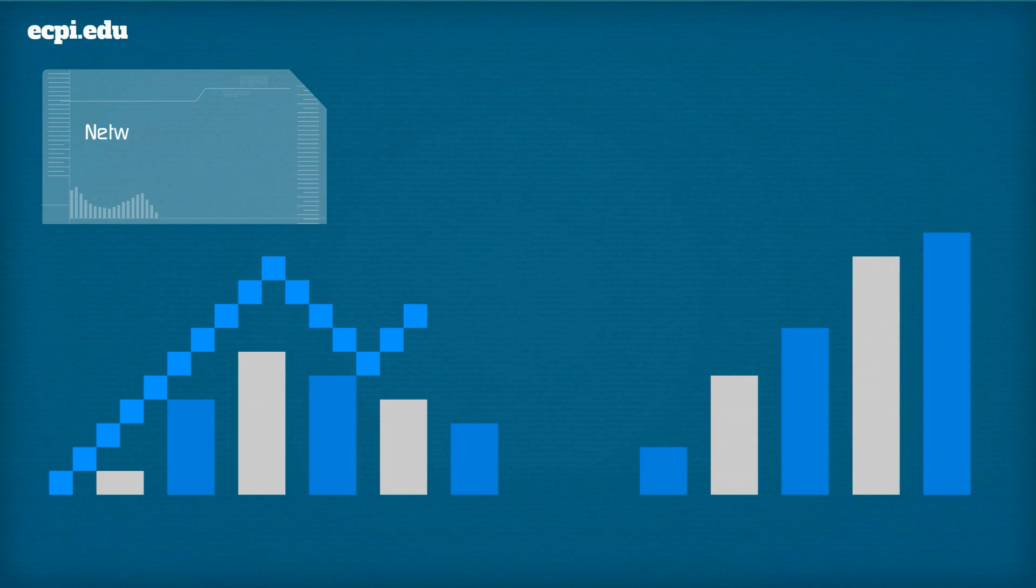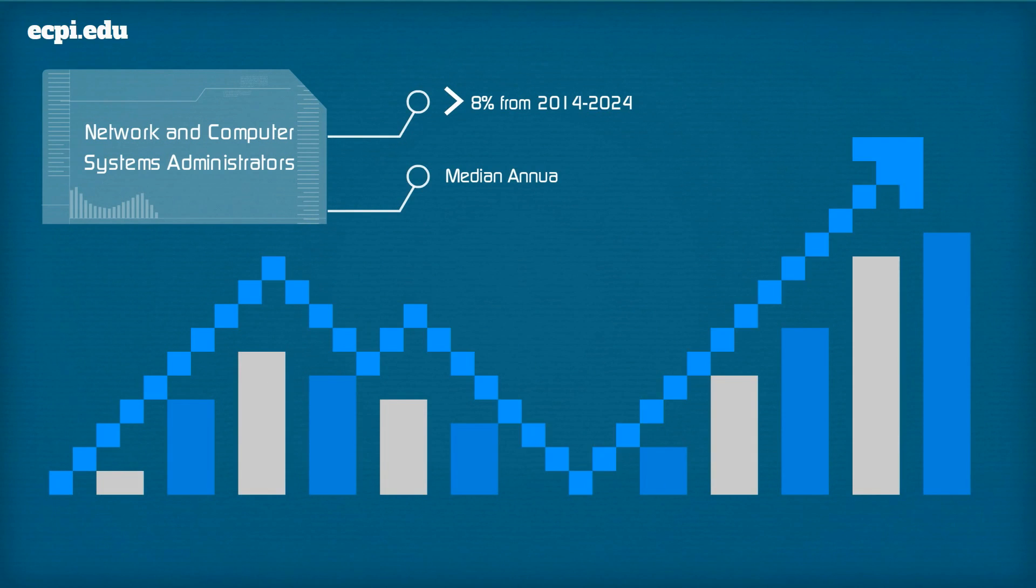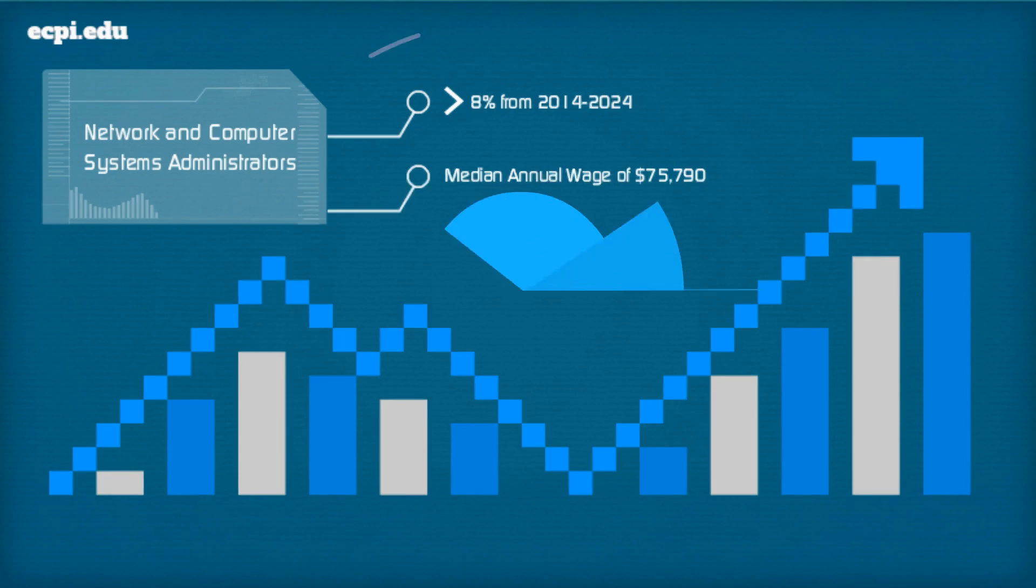Employment of network and computer systems administrators is expected to grow 8% from 2014 to 2024, and with a median annual wage of $75,790, the cloud's the limit.